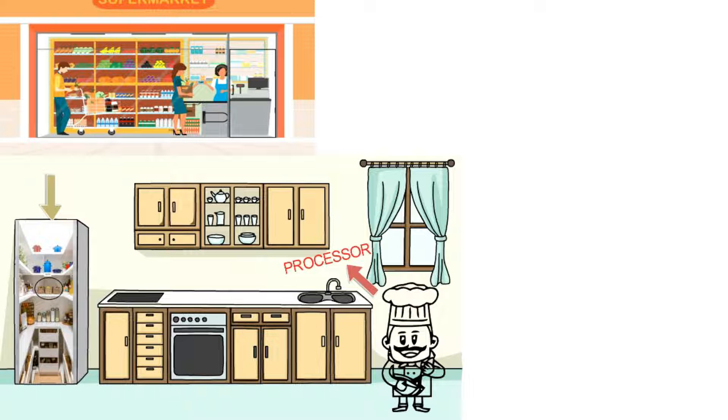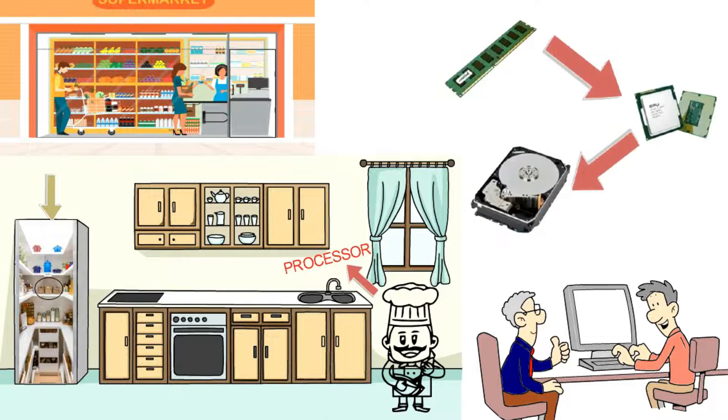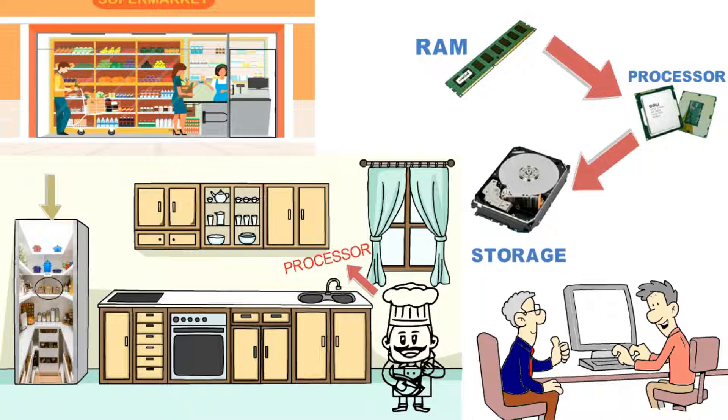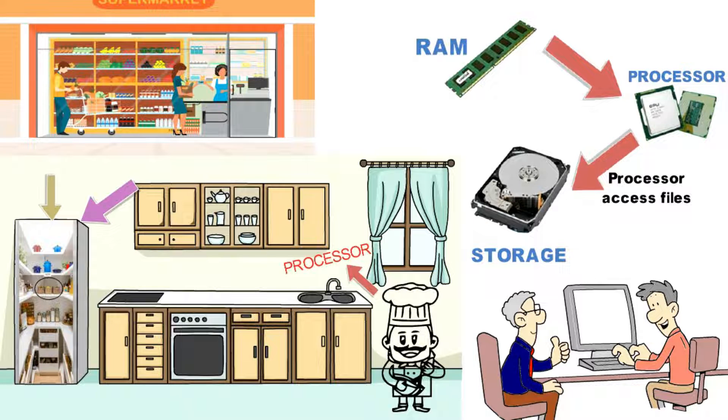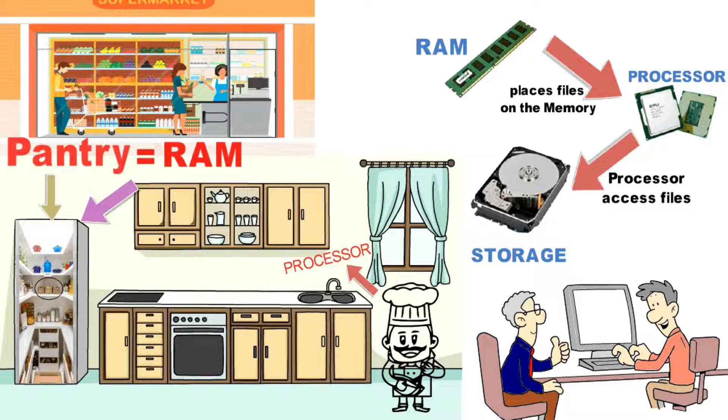Depending on the pantry size, you can store as many ingredients as possible. So basically, when you use your computer, the processor, or chef, can access the files that are saved on the drive, like the chef pulling ingredients out from the grocery store. It will then take those files, or ingredients, and place them on the memory, the pantry, to use the files. When the processor is finished using the files, it can place them back in the storage.